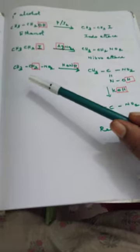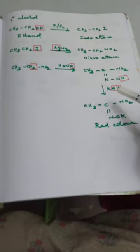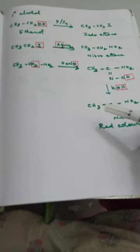In Step 3, nitroethane is treated with nitrous acid, HONO. The H2 present in the CH2 group reacts with the OH and is removed as water. The main product is CH3C=NOH with an NO2 group attached. When this is treated with KOH, the OH in KOH reacts with H and is removed as water, giving CH3C(NO2)=NOK. The color of the solution is red, indicating a primary alcohol.